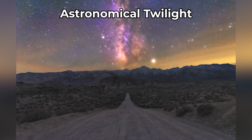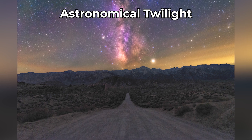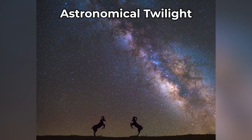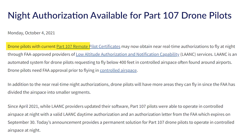Astronomical twilight, also known as complete darkness, is the beginning of lots of stars, constellations, planets, and even the Milky Way. For the most part when flying your drone, you will probably only shoot during daylight or golden hour. And after recent changes, you are allowed to fly at night, whether you're part 107 certified or just flying recreationally, but you need to have proper anti-collision lights that can be visible from three statute miles.